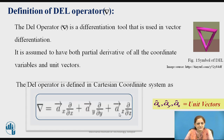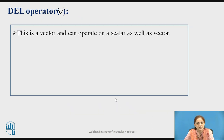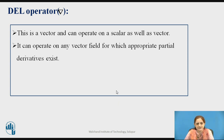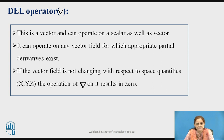The unit vectors are â_x, â_y, and â_z. It is assumed to have both partial derivatives of all coordinate variables as well as the unit vectors, which show the direction and have magnitude equal to unity. The del operator is a vector and can be operated on scalar as well as vector quantities. It can operate on any vector field for which appropriate partial derivatives exist. If the vector field is not changing with respect to space coordinates x, y, z, then the operation of del on it results in zero.